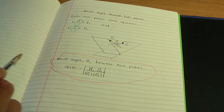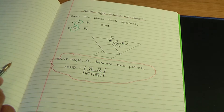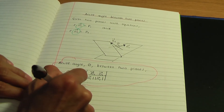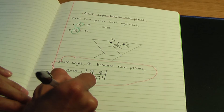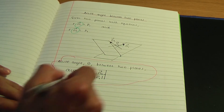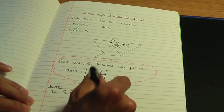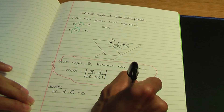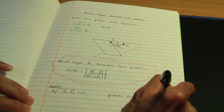Remember the result from a previous video related to the scalar product: if you take the scalar product of two vectors and the outcome is zero, the two vectors are perpendicular. Likewise, if you work out n1·n2 and the outcome is zero, that means the planes are perpendicular to one another.